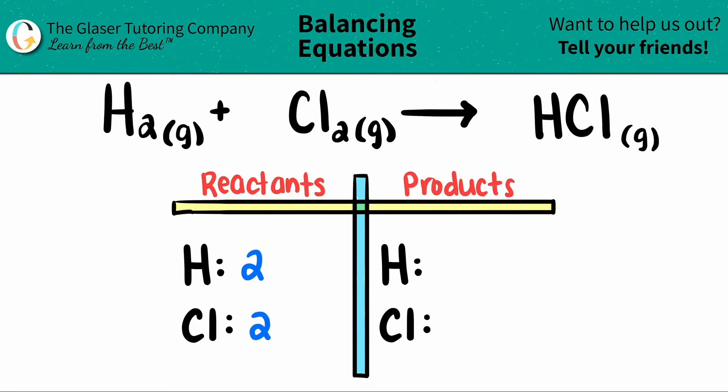For the right-hand side, I see that I have a hydrogen, but there's no subscript, so that just means I have one of them. And the same thing goes for the chlorine. I don't see any subscripts, so that means I have one.